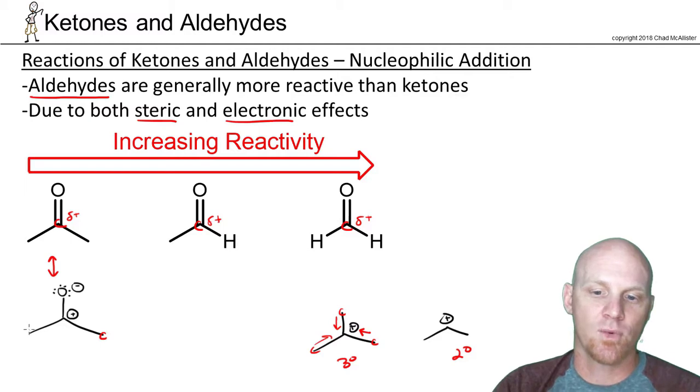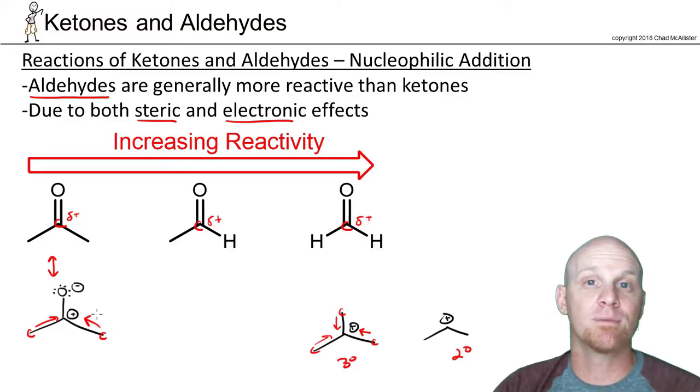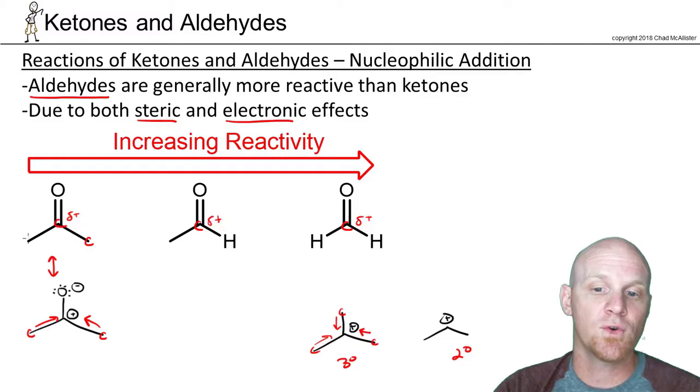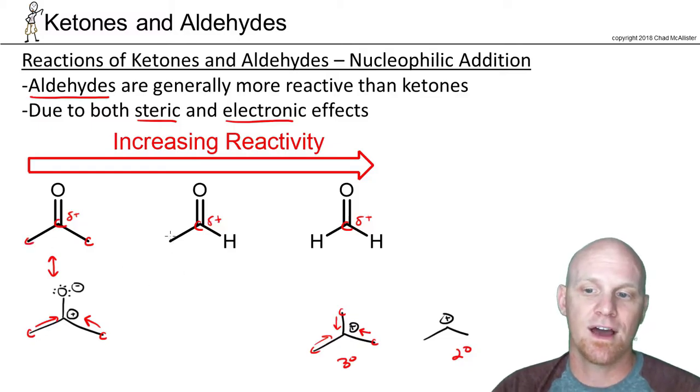Well, in our case here, our reactivity is due to our partial positive charge. And so the more carbon chains we have donating toward it, the less positive it becomes, and it becomes a weaker electrophile. And so ketones having two carbons are the weakest of the electrophiles. And a normal aldehyde having just one carbon attached to the carbonyl to donate would be a little bit stronger electrophile than a ketone.